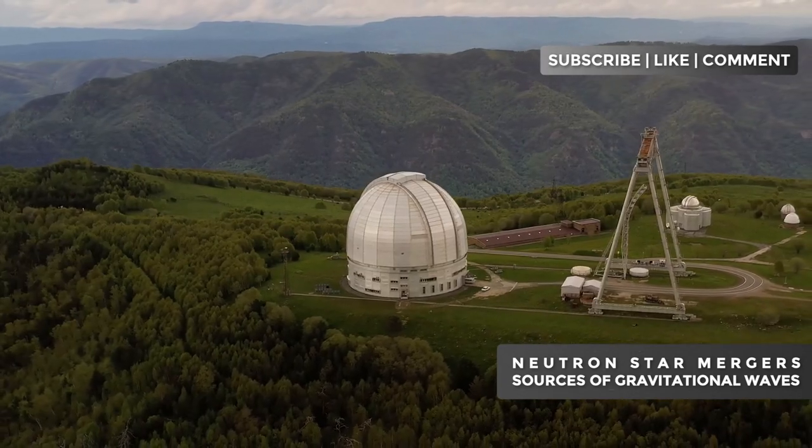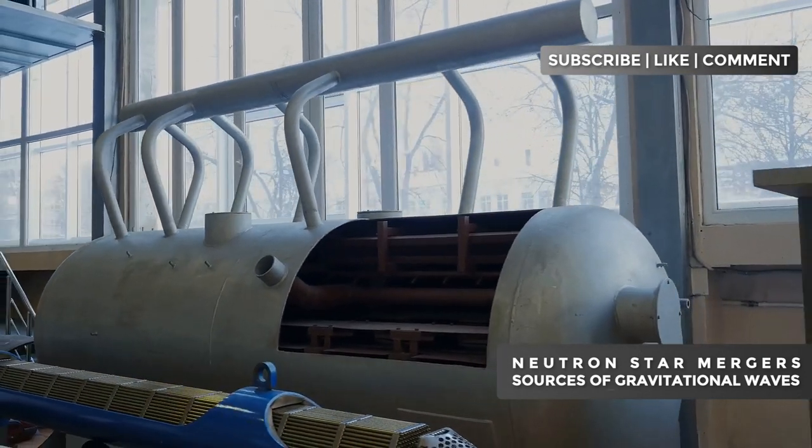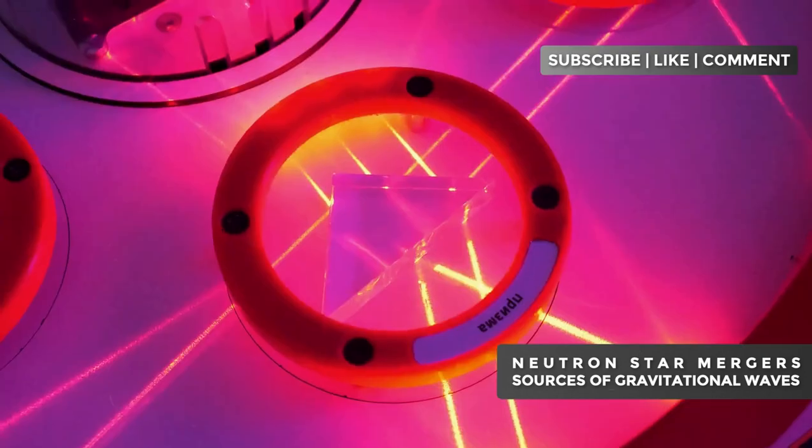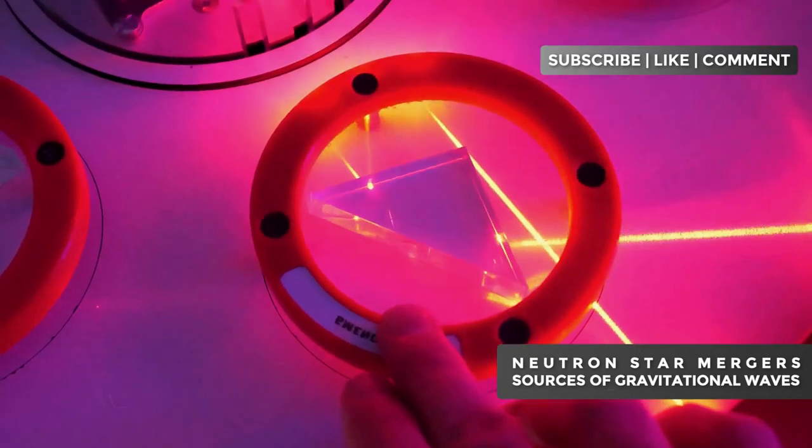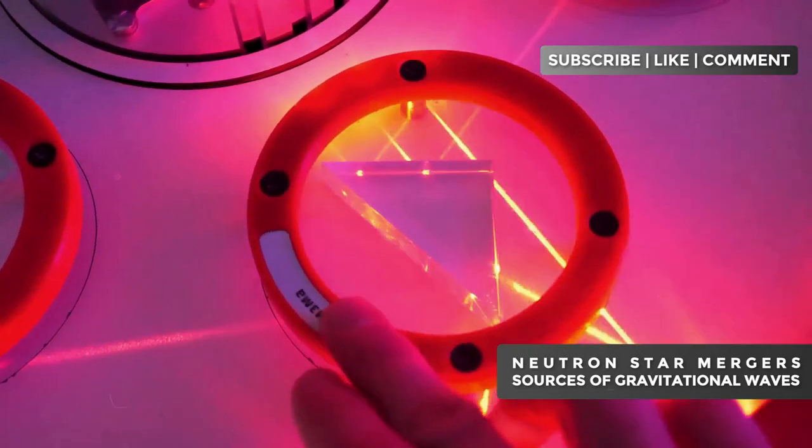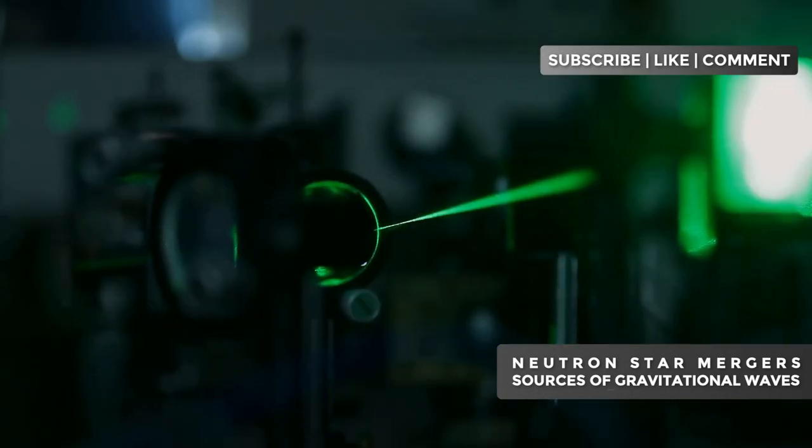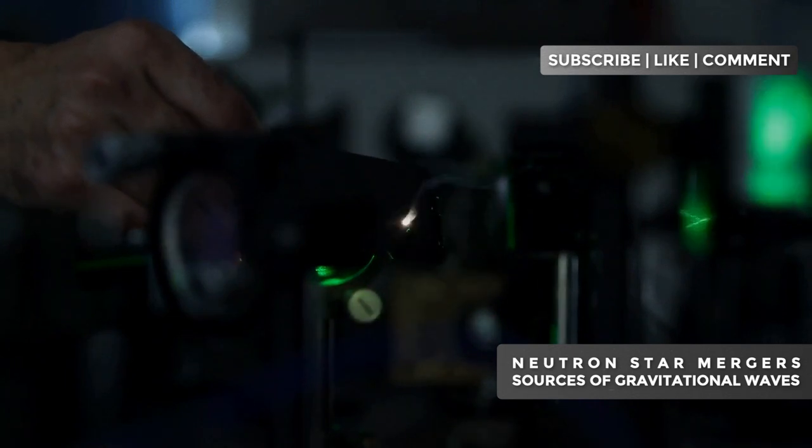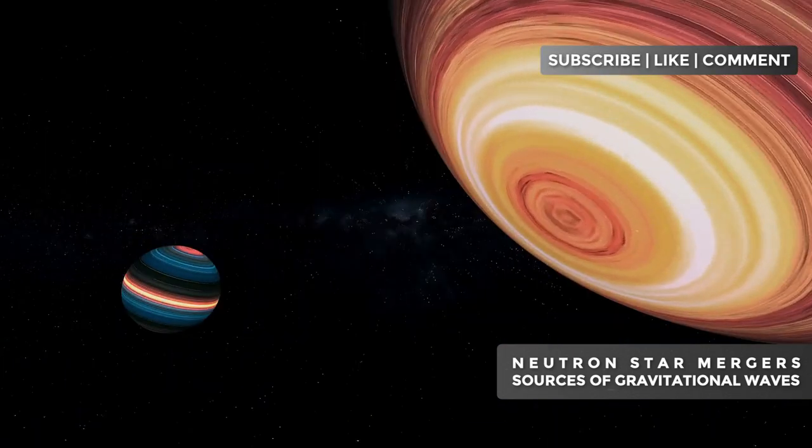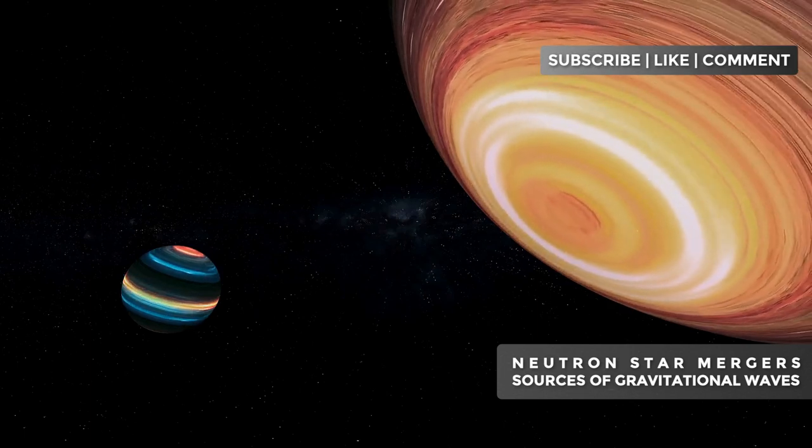LIGO is a marvel of modern engineering. Imagine an L-shaped tube, with each arm measuring 2.5 miles in length. Inside these tubes, laser beams travel in an almost perfect vacuum, reflecting off mirrors at the ends. When a gravitational wave passes, it slightly stretches one arm and compresses the other, altering the interference pattern of the lasers. This change is so small that it's equivalent to detecting a variation smaller than the diameter of a proton.